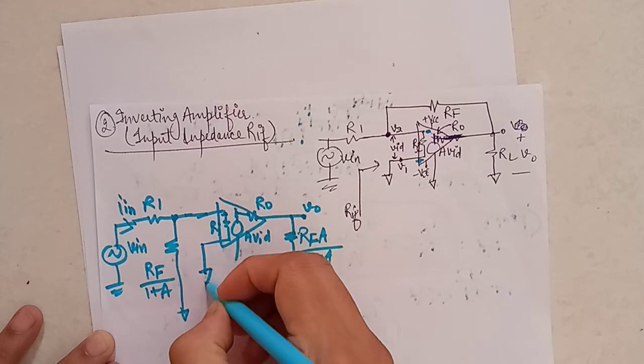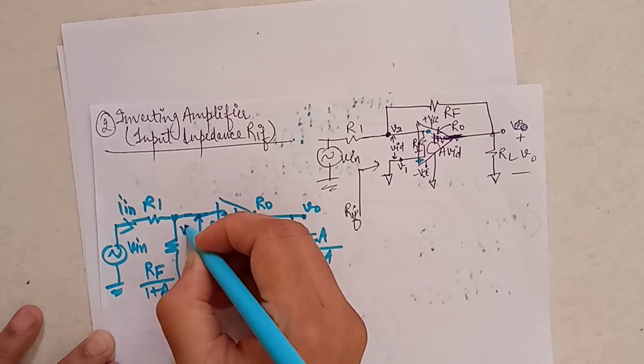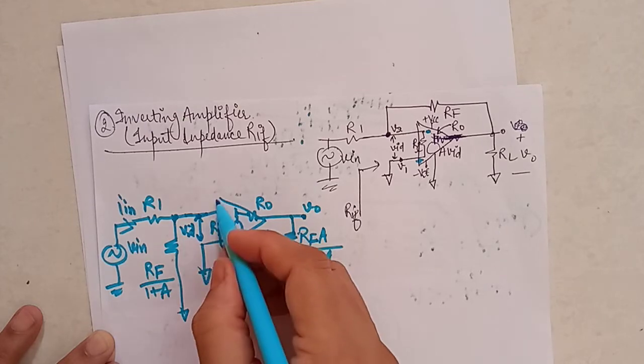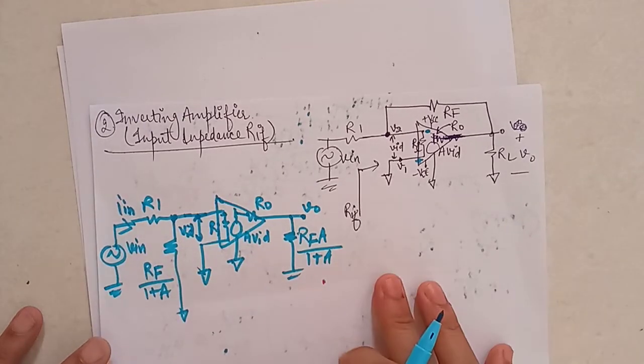So this is the net circuit which you get after applying Miller's theorem. Now you will use the circuit to calculate the value of RIF.